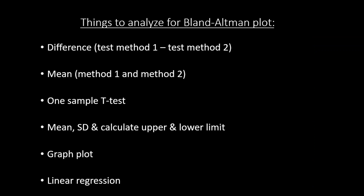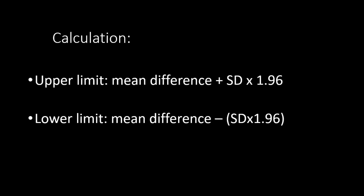These are the steps to consider when performing Bland-Altman in SPSS: first, compute the difference between two methods; then calculate the mean of the two methods; followed by a one-sample t-test, from which we record the mean, standard deviation, and calculate the upper and lower limits; then plot a scatter graph; and finally apply linear regression to interpret. The formula for upper and lower limits uses mean difference and standard deviation obtained from the one-sample t-test.